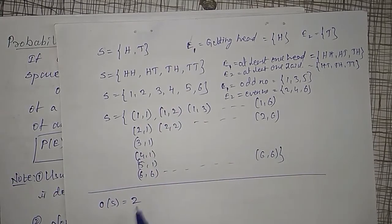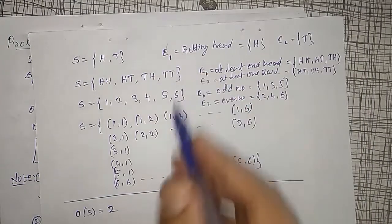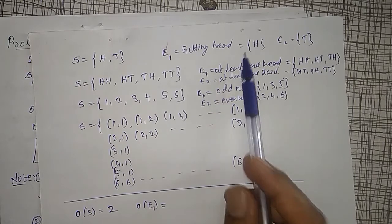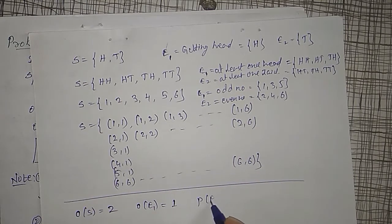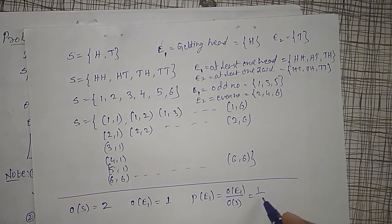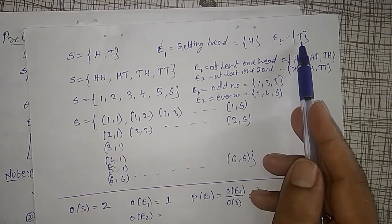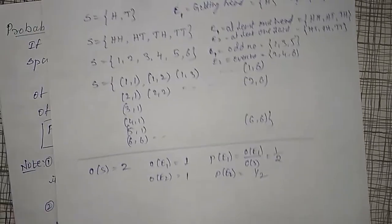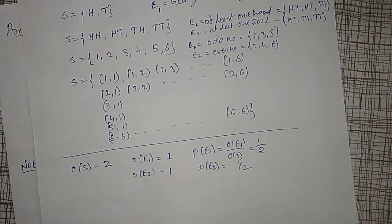Whenever a single coin is tossed, order of S is equal to 2. For event E1 — getting a head — the order of E1 is 1. Therefore, probability of E1 equals 1 divided by 2, that is 1/2. Similarly, order of E2 — getting a tail — is also 1, so probability of E2 is also 1/2.